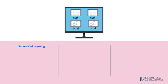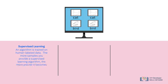This type of machine learning is called supervised learning, where an algorithm is trained on human labeled data. The more samples you provide a supervised learning algorithm, the more precise it becomes in classifying new data.